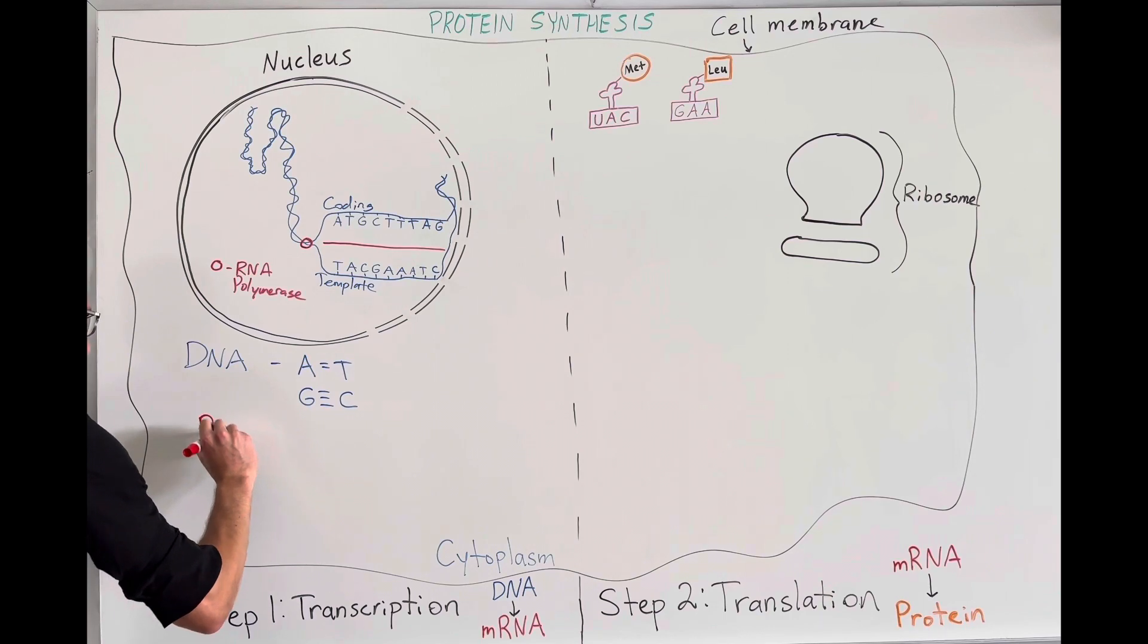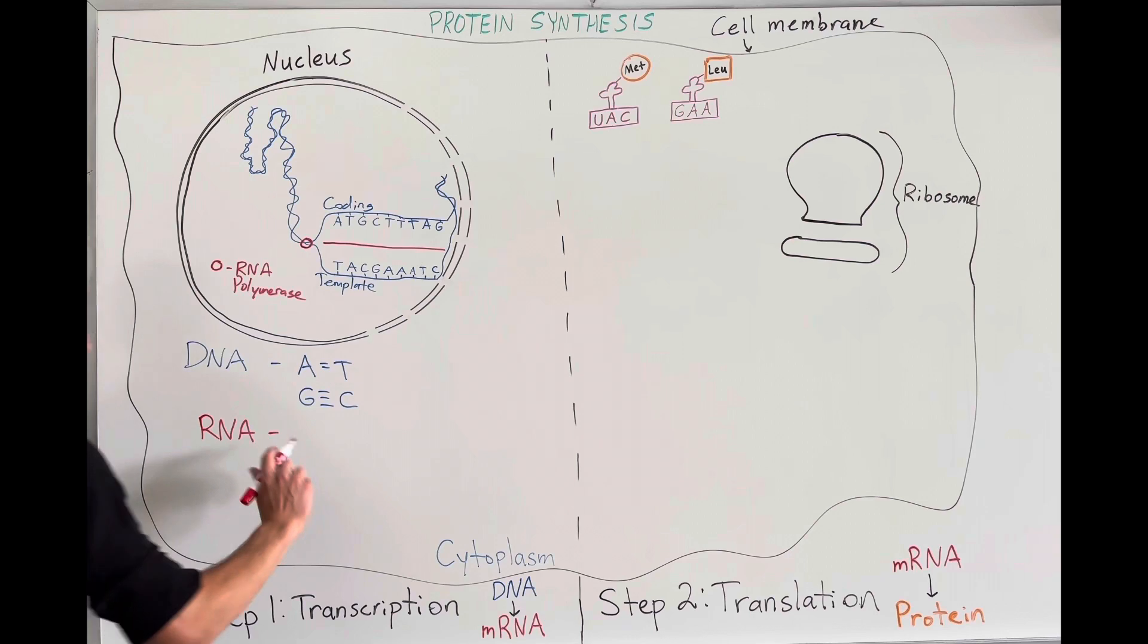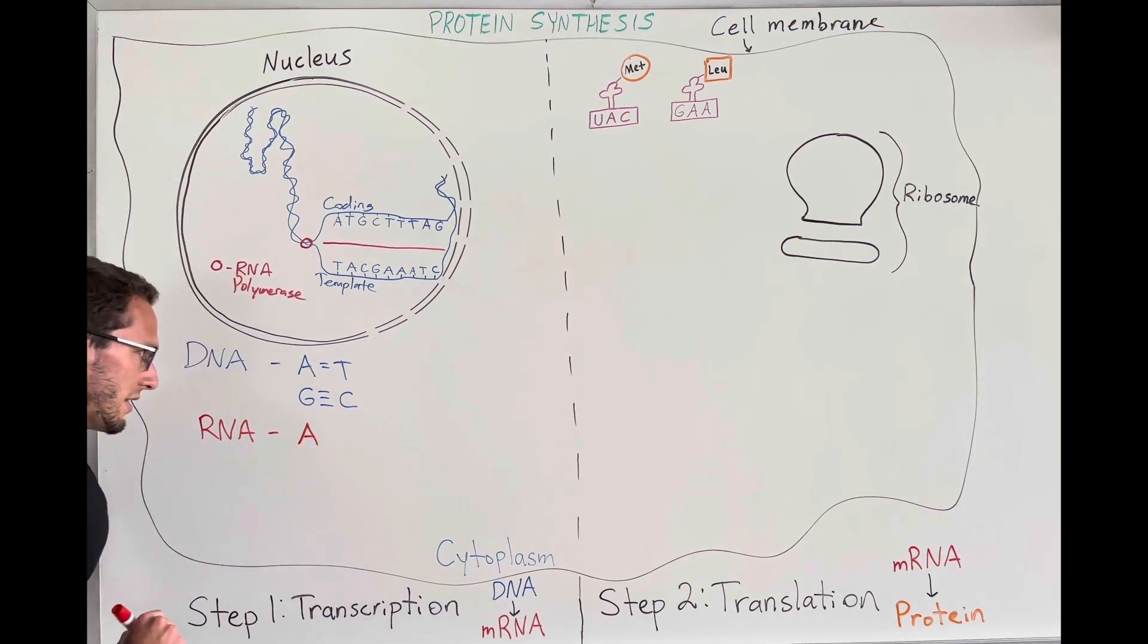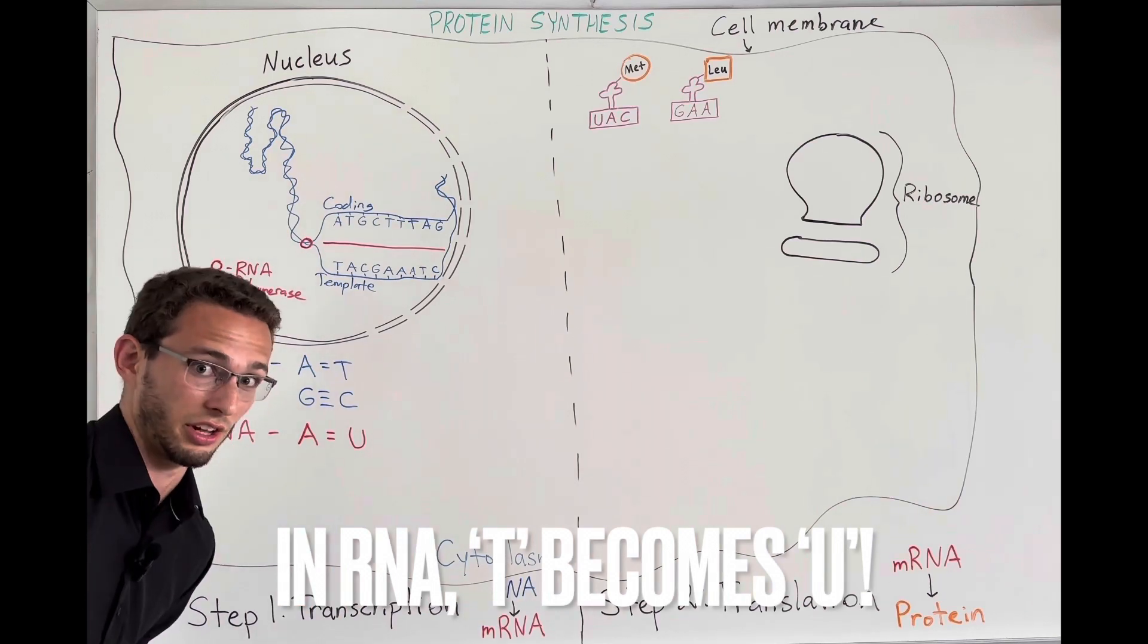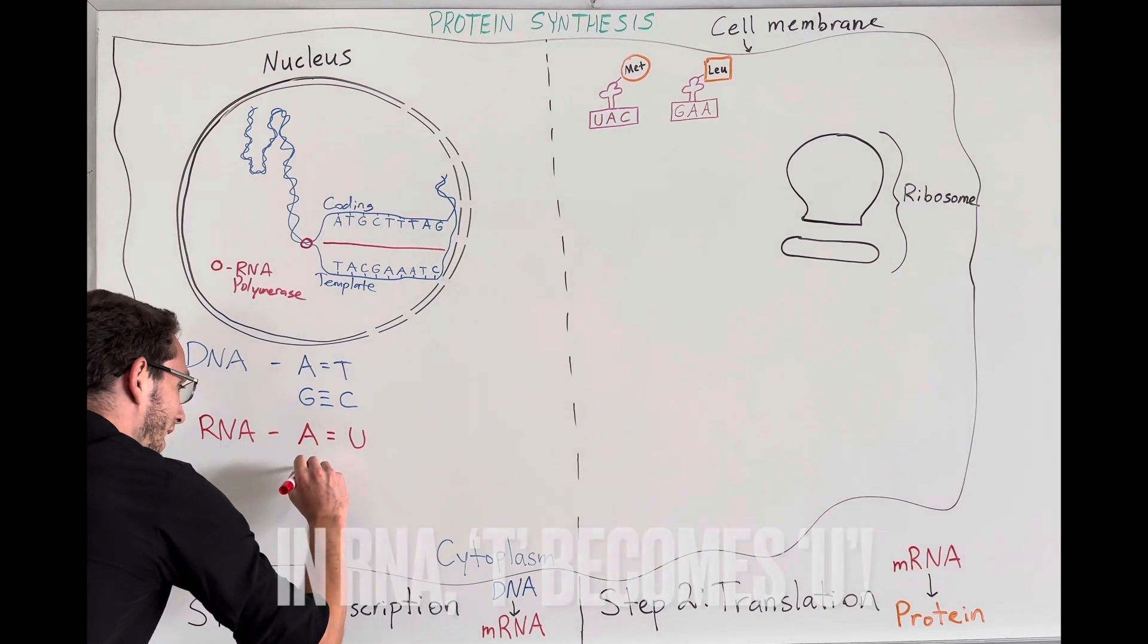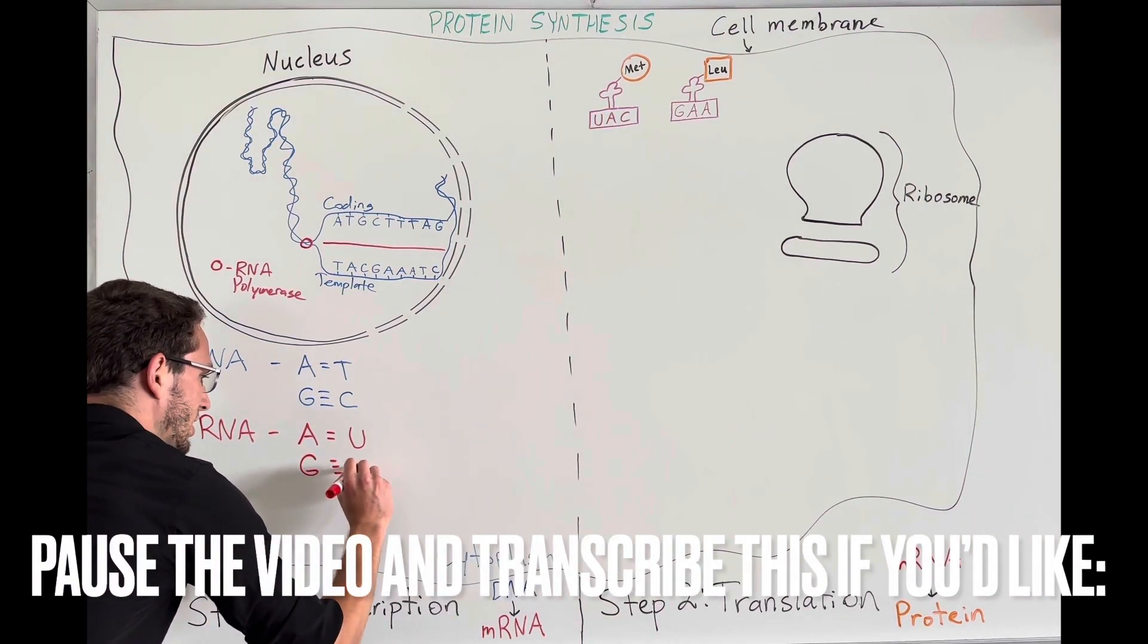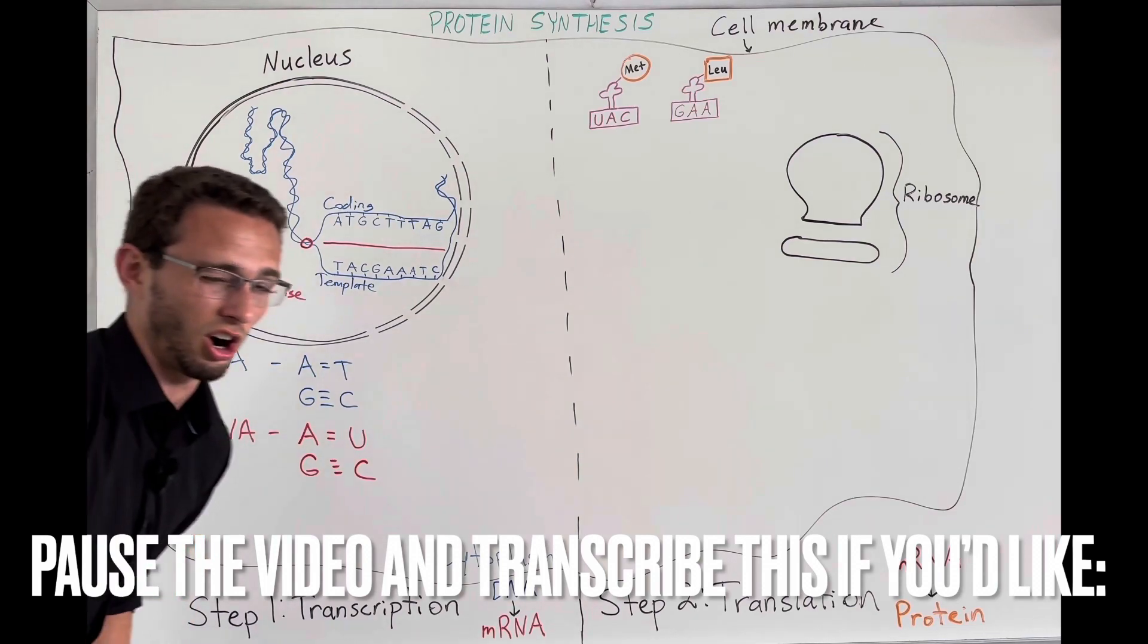So here's a key thing you need to know, though. In RNA, we have one letter of a switch. So be really careful with this. A will still be there, but it will actually bond with U, which stands for uracil. So in RNA, we're replacing the T with a U. And the G will still go with C through hydrogen bonds. And this is specifically messenger RNA.